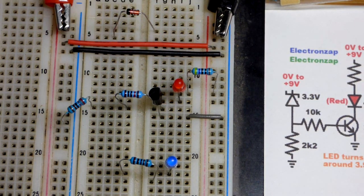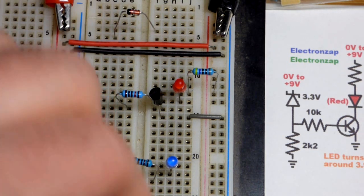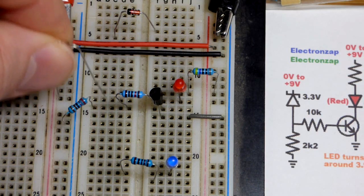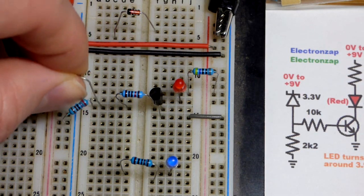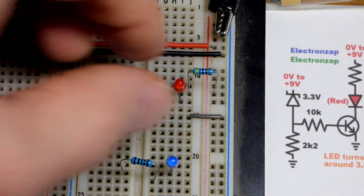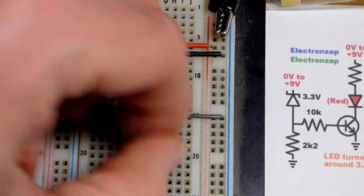So this was a 3.3 volt zener diode. I did look at it up close. It said 3V3. And I think this is the 5.1 volt zener diode. We will soon see. This one is much more accurate with its zener voltage even at low currents.